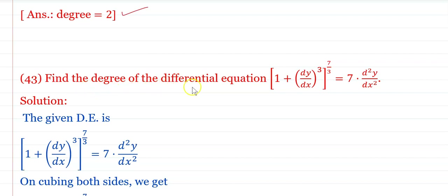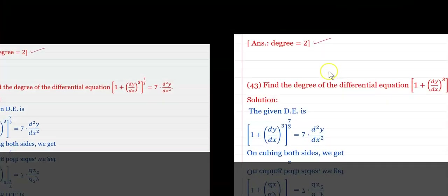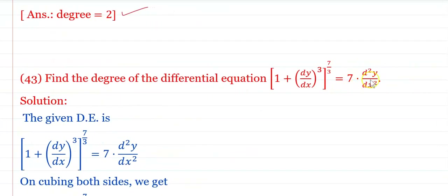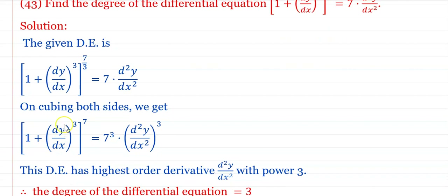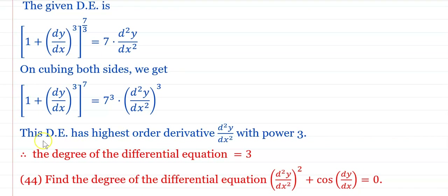Find the degree of the differential equation (1 + dy/dx)^(7/3) = 7·d²y/dx². Cubing both sides: (1 + dy/dx)^7 = 7³·(d²y/dx²)³. The highest order derivative is d²y/dx² with power 3. Therefore the degree is 3.